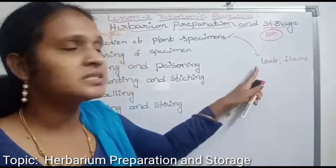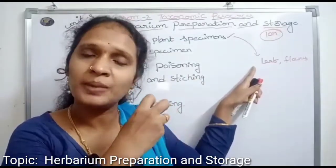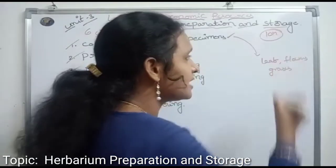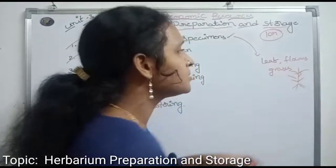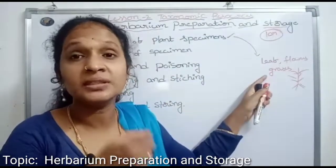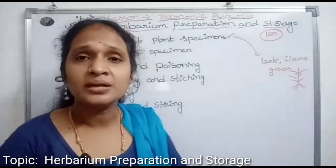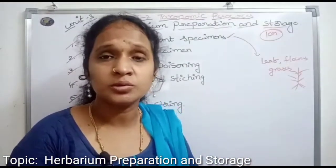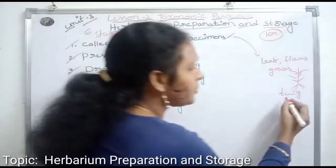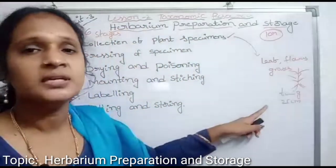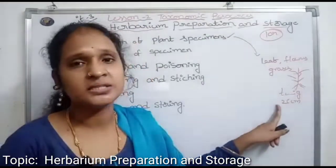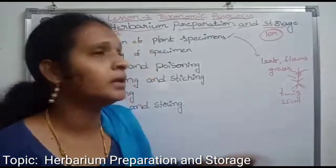For herbaceous plants like grasses, we collect the entire plant body with underground parts and roots. But for woody plants like large trees, we collect single twigs of about 25 cm that bear leaves and flowers.